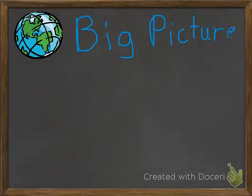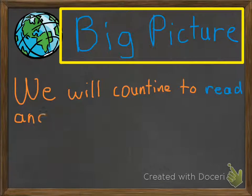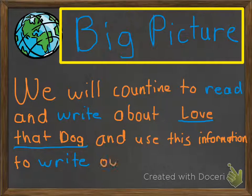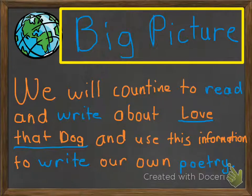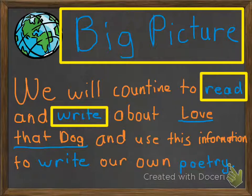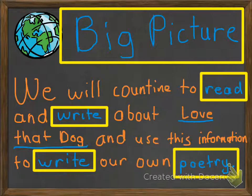So first of all, let's take a look at the big picture before we begin Unit 2. What are we doing? Why are we doing it? In Unit 2, we're going to continue to read and write about Love That Dog, and we're going to use this information to write our own poetry. That's our big focus in Unit 2.